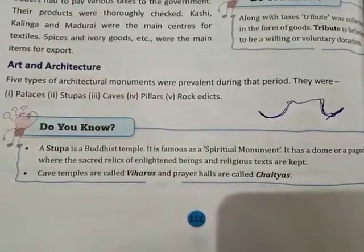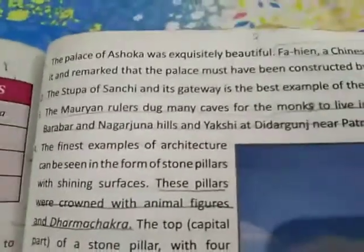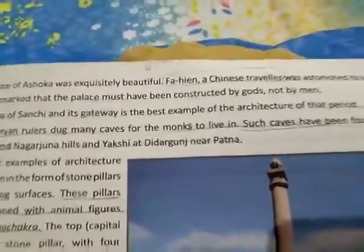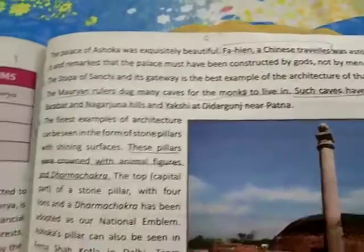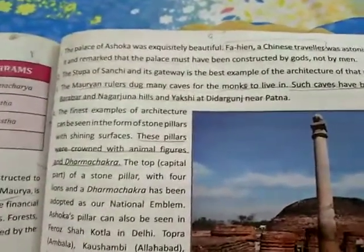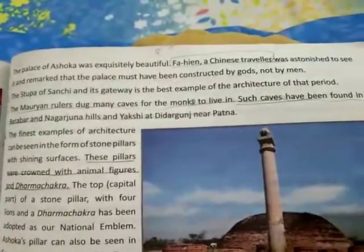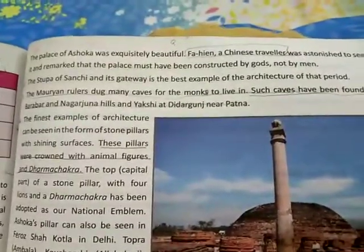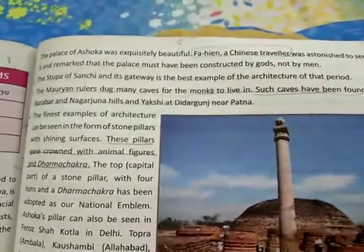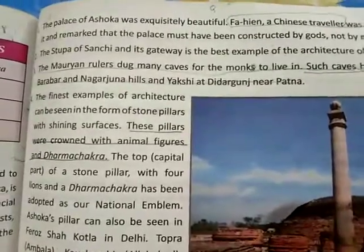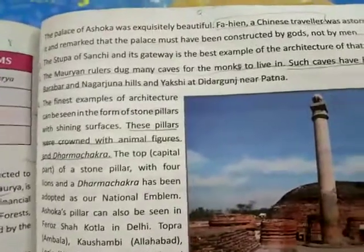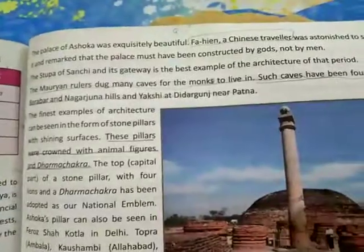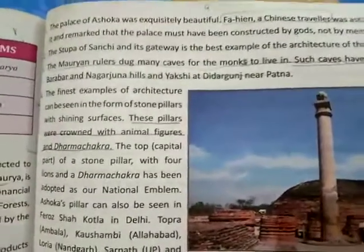Cave temples are called Viharas and prayer halls are known as Chaityas. The palace of Ashoka was exceptionally beautiful. Faxian, a Chinese traveler, was astonished to see it and remarked that the palace must have been constructed by God, not by men. The Stupa of Sanchi and its gateway is the best example of architecture of that period.